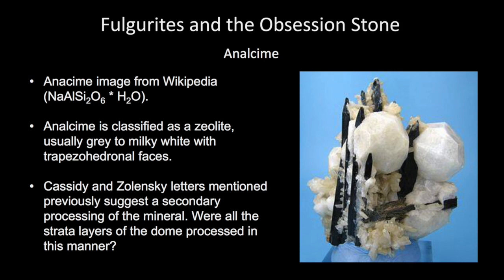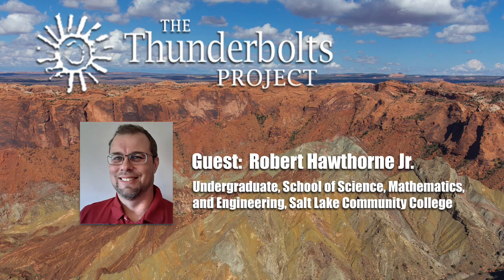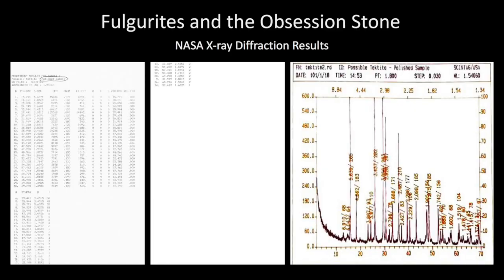Were all the strata layers in this stone processed in this manner? That was something that I wanted to try and find out. We have multiple rocks at different colors and luster. These graphs show the X-ray diffraction of the purple sample, the rock that was in the previous slide. This is the result of that sample.